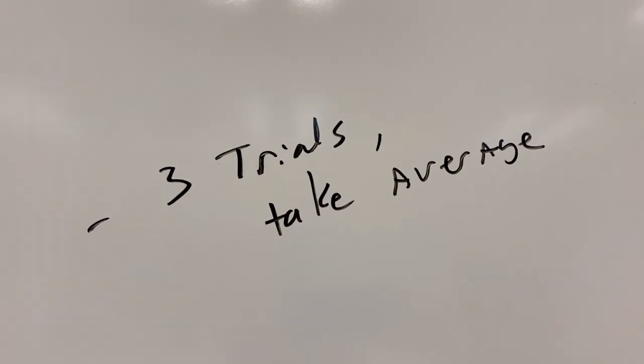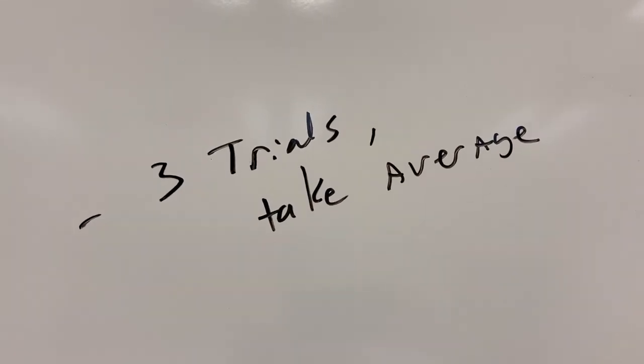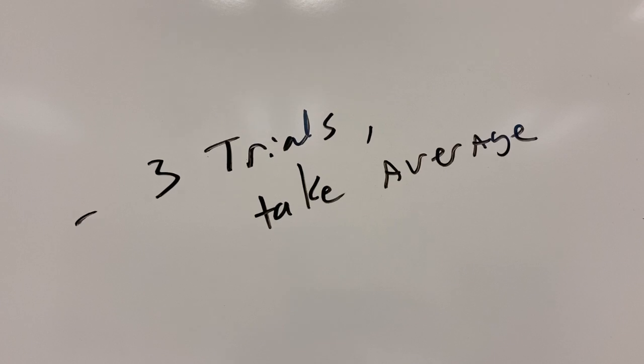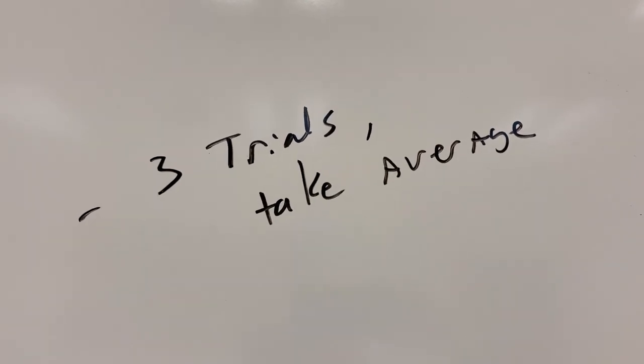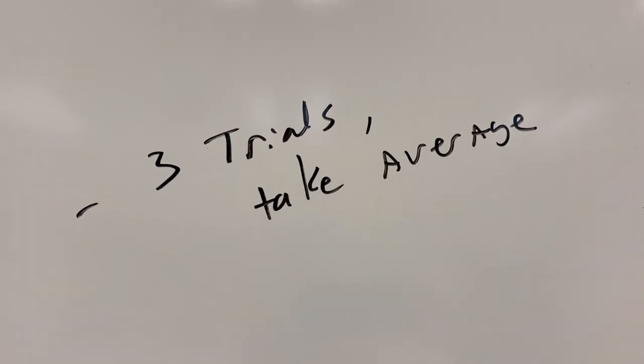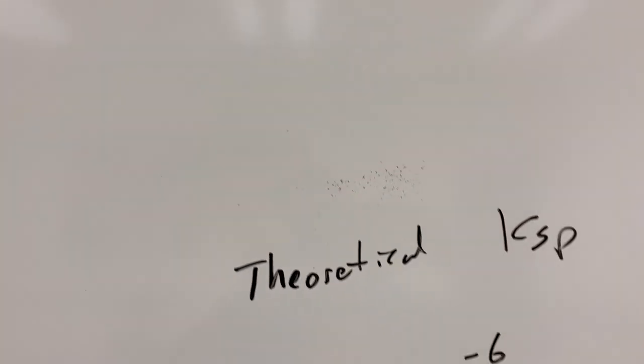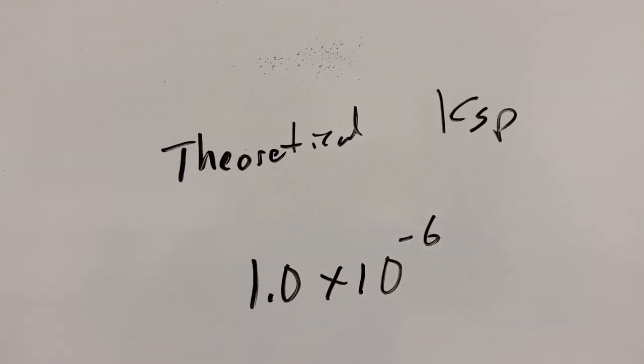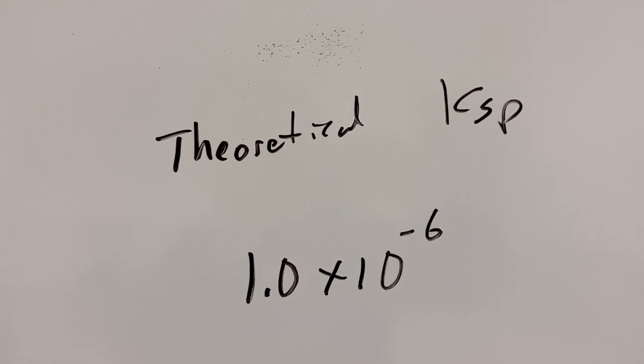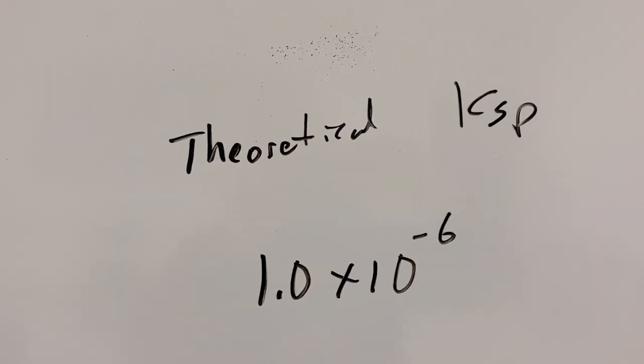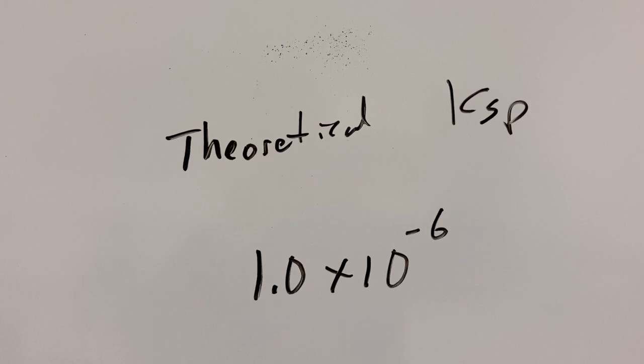So you should get about three trials and calculate the average volume used, and from that average volume you're going to go ahead and calculate what the Ksp is. And your theoretical Ksp for this reaction is 1.0 times 10 to the minus 6, so go ahead and calculate a percent error.